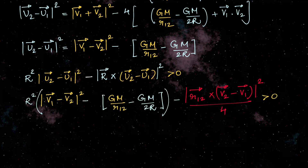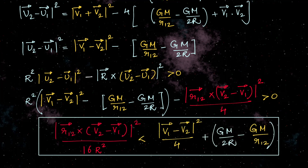Substituting u1 bar and u2 bar in terms of the given variables, we get the equation. Dividing the final equation by 4r squared, for the two planets to collide we get: (r12 bar cross (v2 bar minus v1 bar)) whole square divided by 16r squared must be less than (v1 bar minus v2 bar) whole square divided by 4 plus gm by 2r minus gm by r12.